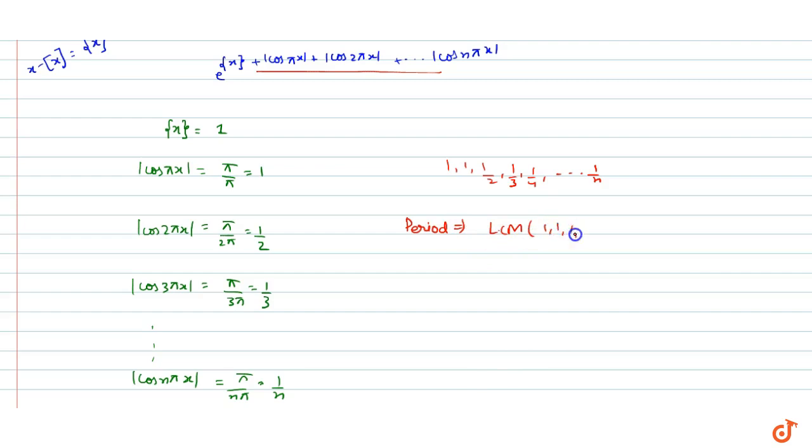To find the LCM of 1, 1/2, 1/3, ..., 1/n, we take LCM of numerators over HCF of denominators. The LCM of all the 1s is 1, and the HCF of 1, 2, 3, ..., n is 1.